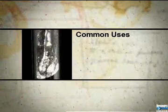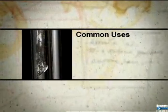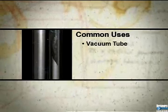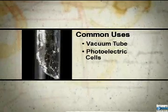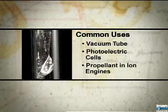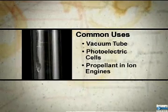Because it reacts so easily with other elements, rubidium is used to remove trace gases in vacuum tubes and to manufacture photoelectric cells. In the future, rubidium may be used as a propellant in ion engines for space vehicles.